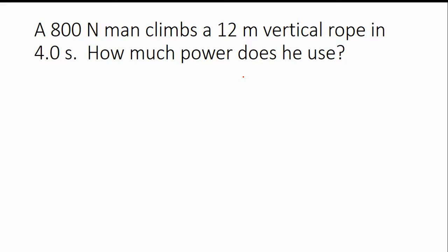That takes us to this next problem. A 800 Newton man climbs a 12 meter vertical rope in four seconds. How much power does he use? So we're solving for power and we only have one equation that has power in it: power equals work divided by time. Now we know the time, that's in seconds. But work, we are not given work anywhere in this problem. Because remember, work is joules and neither of these units are joules.